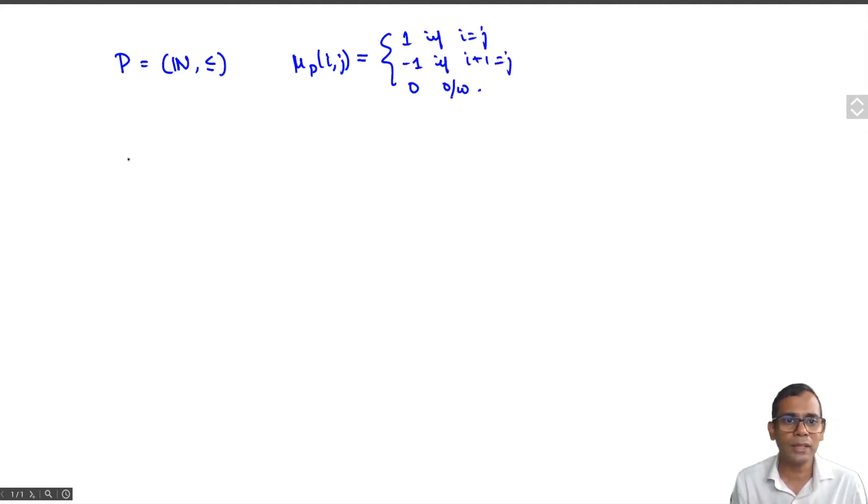Another example that I looked at in the very first lecture of this course was if you take p equals the square of non-negative pairs of non-negative integers, where we define that (i,j) is less than or equal to (i',j') if and only if i is less than or equal to i' and j is less than or equal to j'.